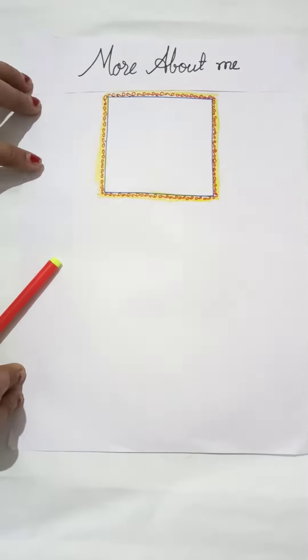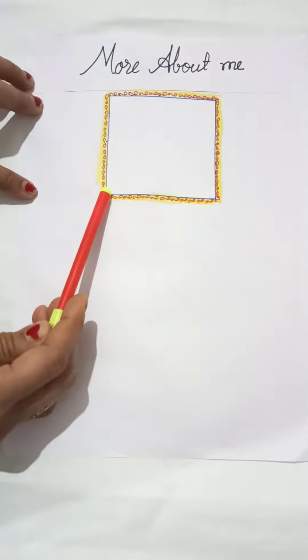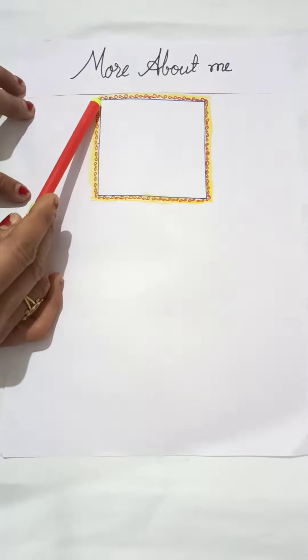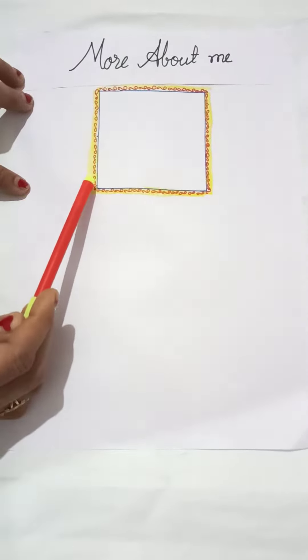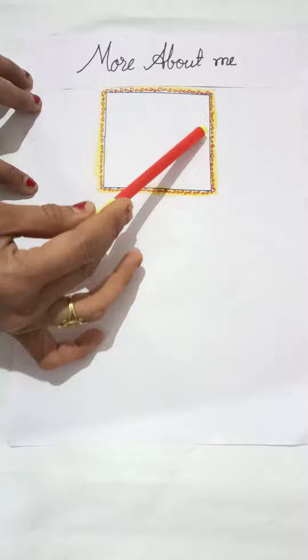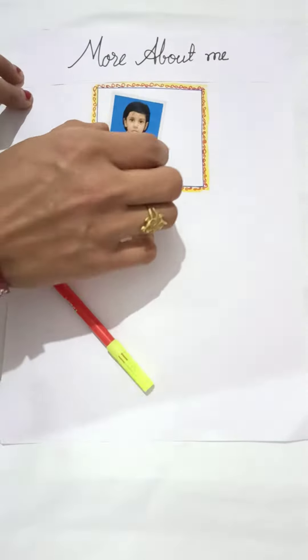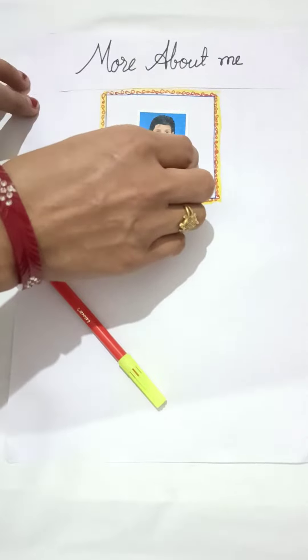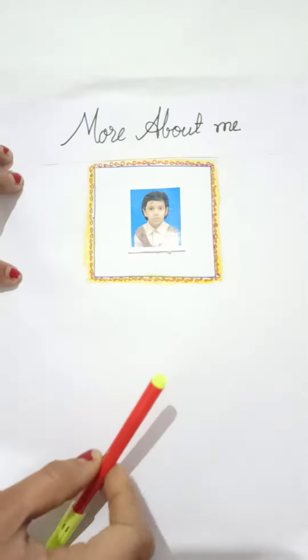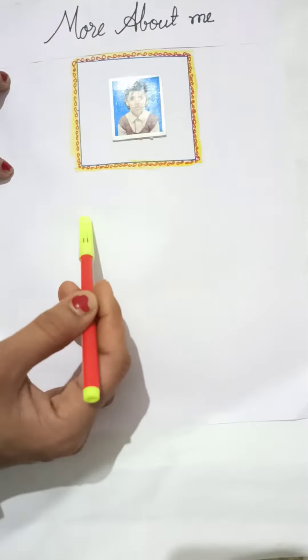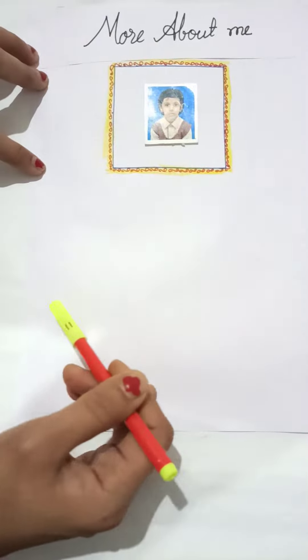So, you have to draw one frame like this and decorate it with beautiful designs and colors. You have to paste your picture here like this, and after then, you have to write 10 sentences about yourself.